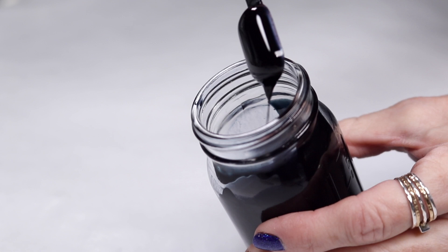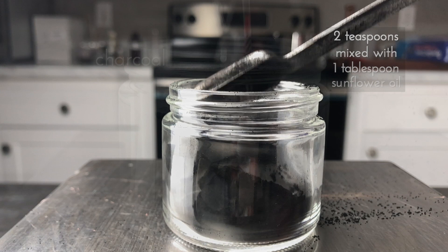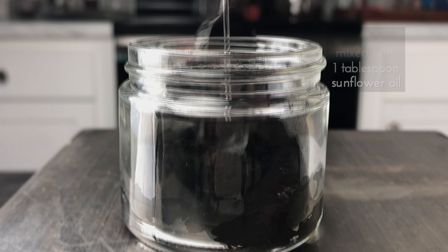Finally, to help me darken some of the other colors a bit, I prepared some activated charcoal. I measured out about two teaspoons and mixed that with one tablespoon of sunflower oil.